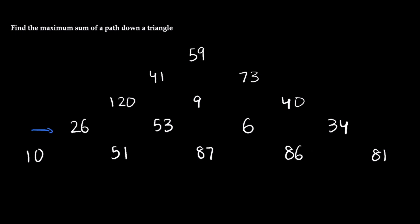So with this row we see that 26, the best path from 26 down is going to be from 26 to 51. So we'll connect a path from there to there and then 53 has neighbors 51 and 87. Well 53's best path is going to be to 87. So we'll connect that path there and then we see from 6 we have neighbors 87 and 86. Well 87 is obviously the better choice so we'll go from 6 to 87. And then our last item is 34. Well 34's largest neighbor is 86. So we'll go from 34 to 86.